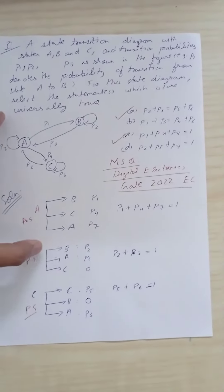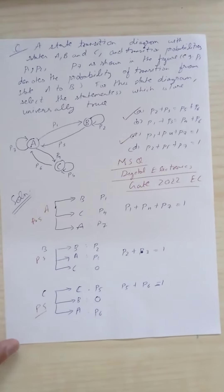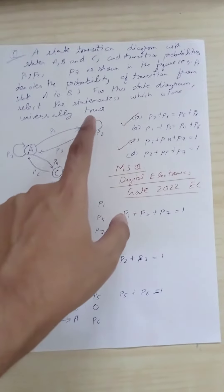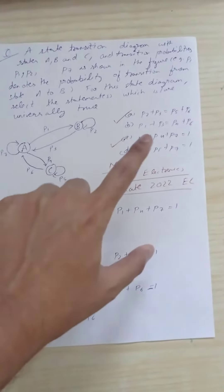This is an MSQ question, so multiple statements can be correct. It says for this state diagram, select the statements which are universally true.